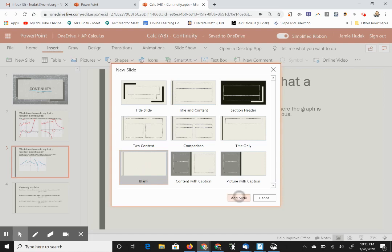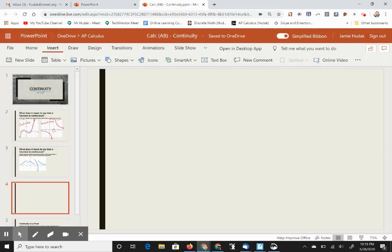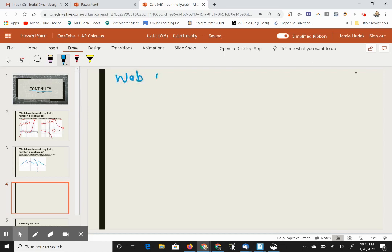And whenever I choose blank, I think of it as a giant whiteboard I can write on. So I go back to my draw menu, and I can now say that this is my web whiteboard. And I can add as many blank slides as I want, and we can completely hand write our lecture.